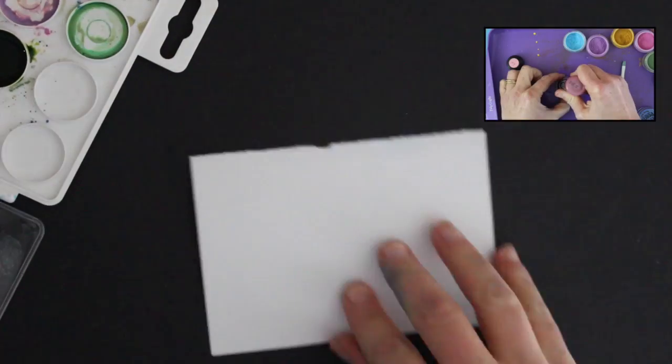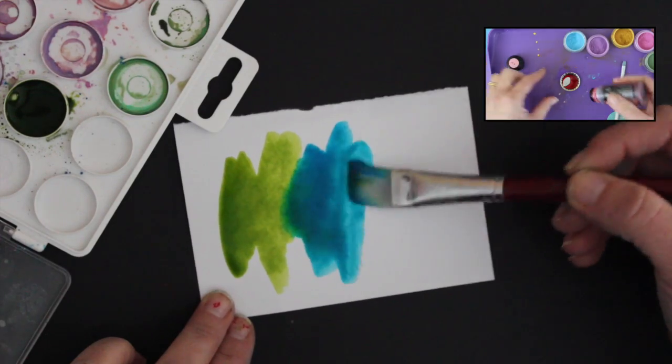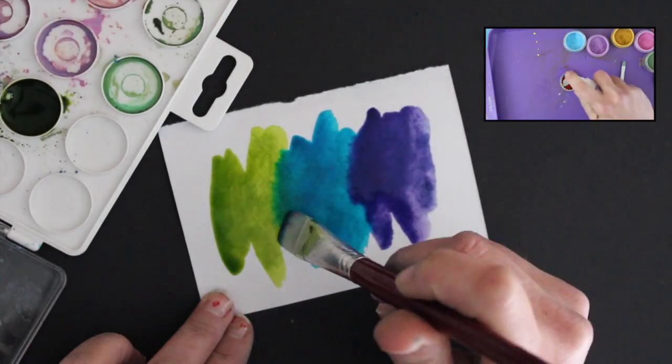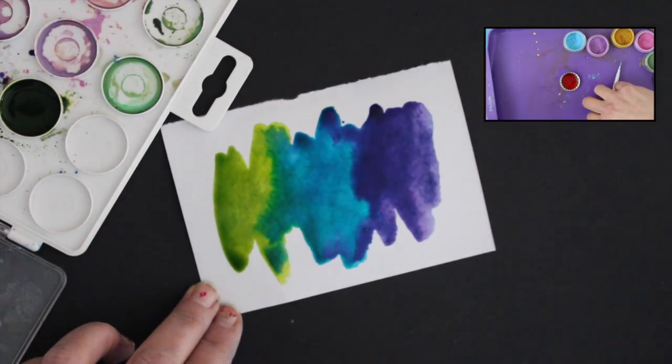Now I did a little tutorial about how to make your own watercolor paints using perfect pearls and you can click the box in the corner to see that, but I wanted to show you kind of over my shoulder how I just put some paint down and did some die cutting to make these fun cards.